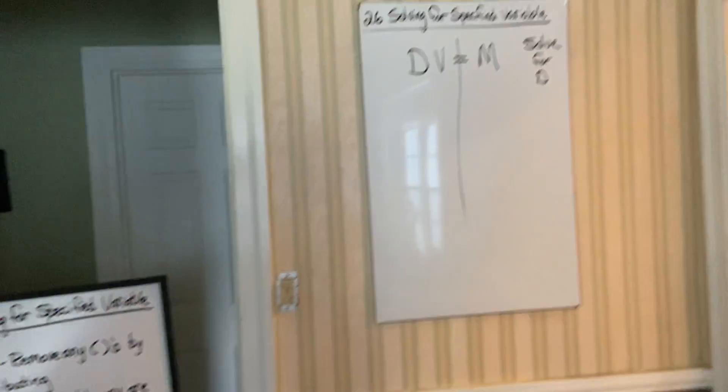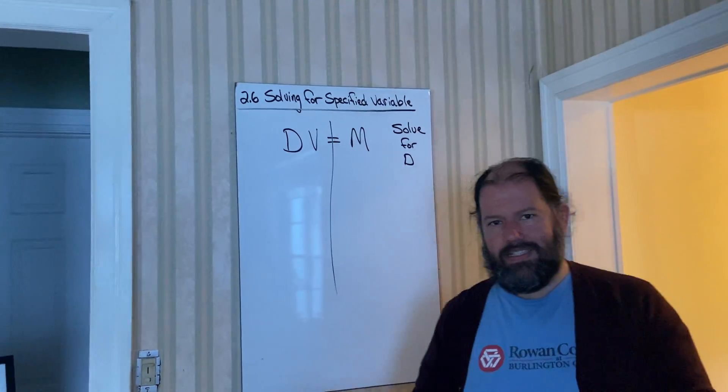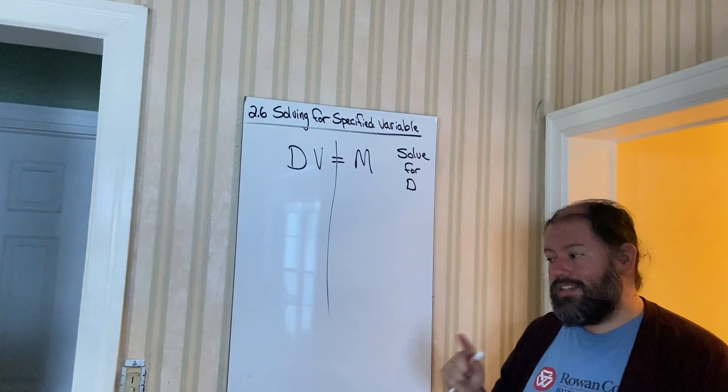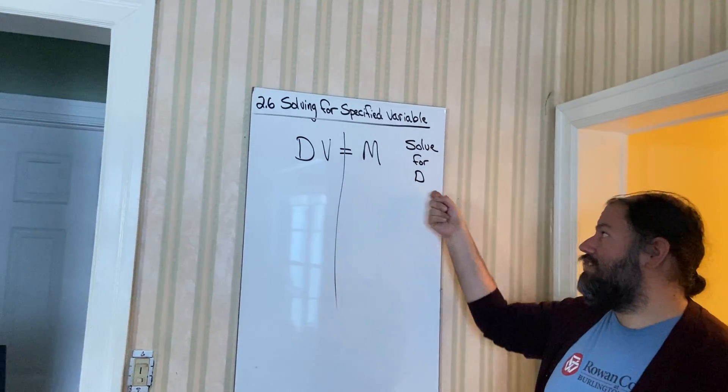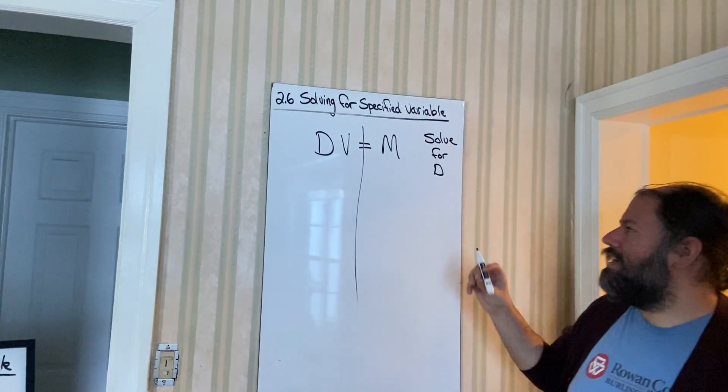So, let's take a look at this guy. You can see we don't have any parentheses. So, we don't have to do any simplifying. The next step, underline the variable that you're asked to solve for. You have to know what letter you're being solved for. So, we're going to underline the letter D.